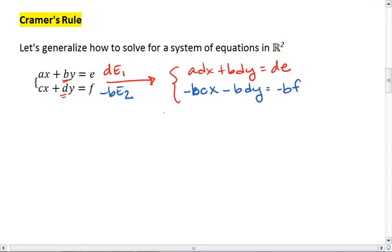I can add these two equations together. My y values cancel because they have opposite coefficients. I end up with AD X minus BC X equals DE minus BF.